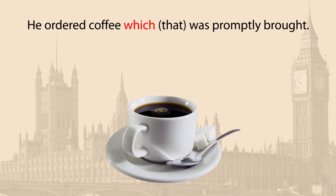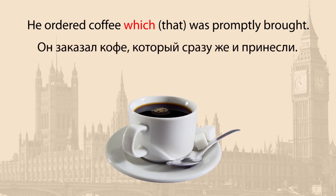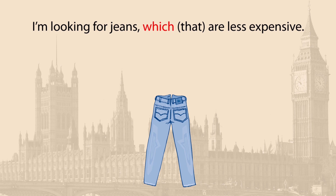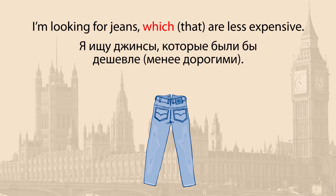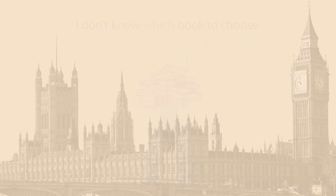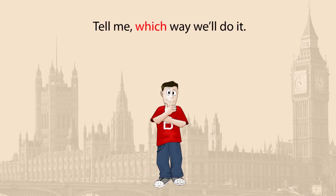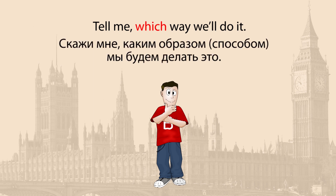Теперь рассмотрим местоимение which (который, которого, что). Оно отличается от предыдущих тем, что относится к неодушевлённым предметам и животным. Также which считается книжным, поэтому в разговорном стиле оно очень часто заменяется местоимением that. For example: He ordered coffee which (or that) was promptly brought — Он заказал кофе, который сразу же и принесли. I am looking for jeans which (or that) are less expensive — Я ищу джинсы, которые были бы дешевле. I don't know which book to choose — Я не знаю, какую книгу выбрать. Tell me which way we will do it — Скажи мне, каким способом мы будем делать это.